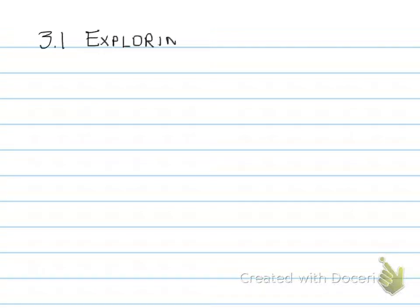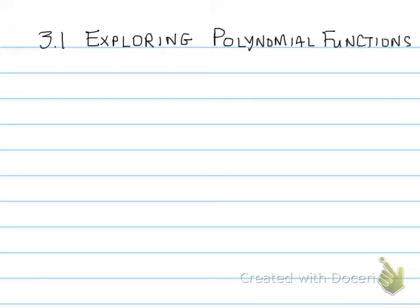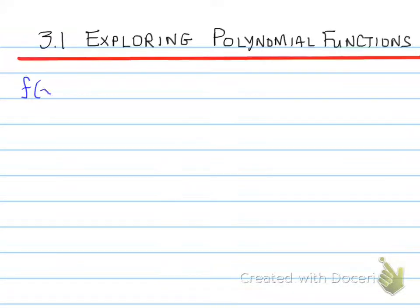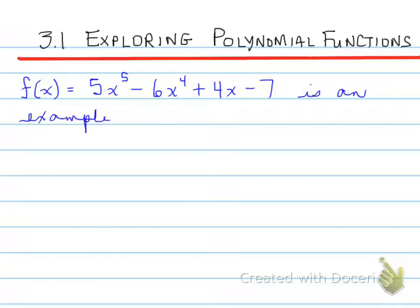3.1, Exploring Polynomial Functions. Let's look at this: f(x) equals 5x to the 5 minus 6x to the 4 plus 4x minus 7. This is an example of a polynomial function.